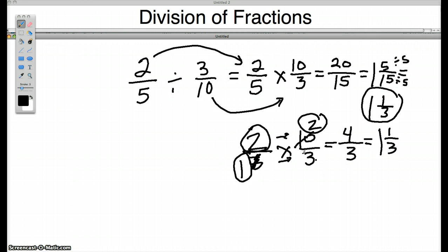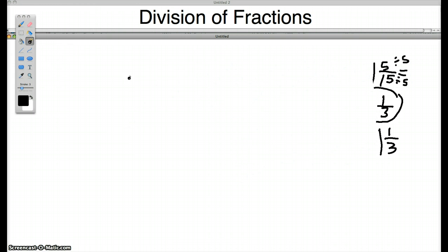So you can see by cross-reducing, by reducing diagonally or simplifying diagonally, before I do the multiplication, I end up with a simpler way of getting the answer at the end. All right, what happens if you have to do a division problem by a whole number or use whole numbers in division of fraction problems? Let's take a look at that type of problem next.